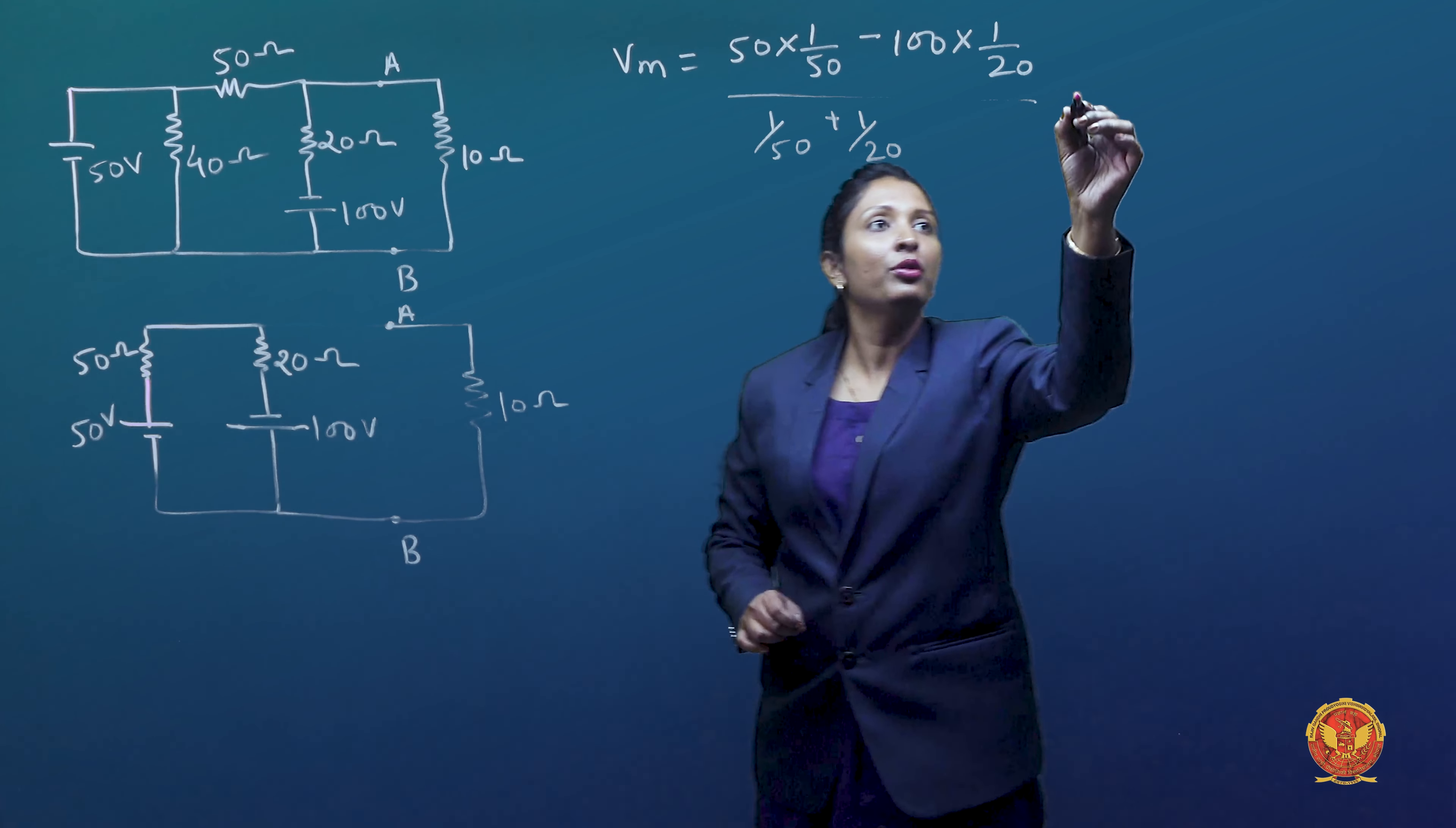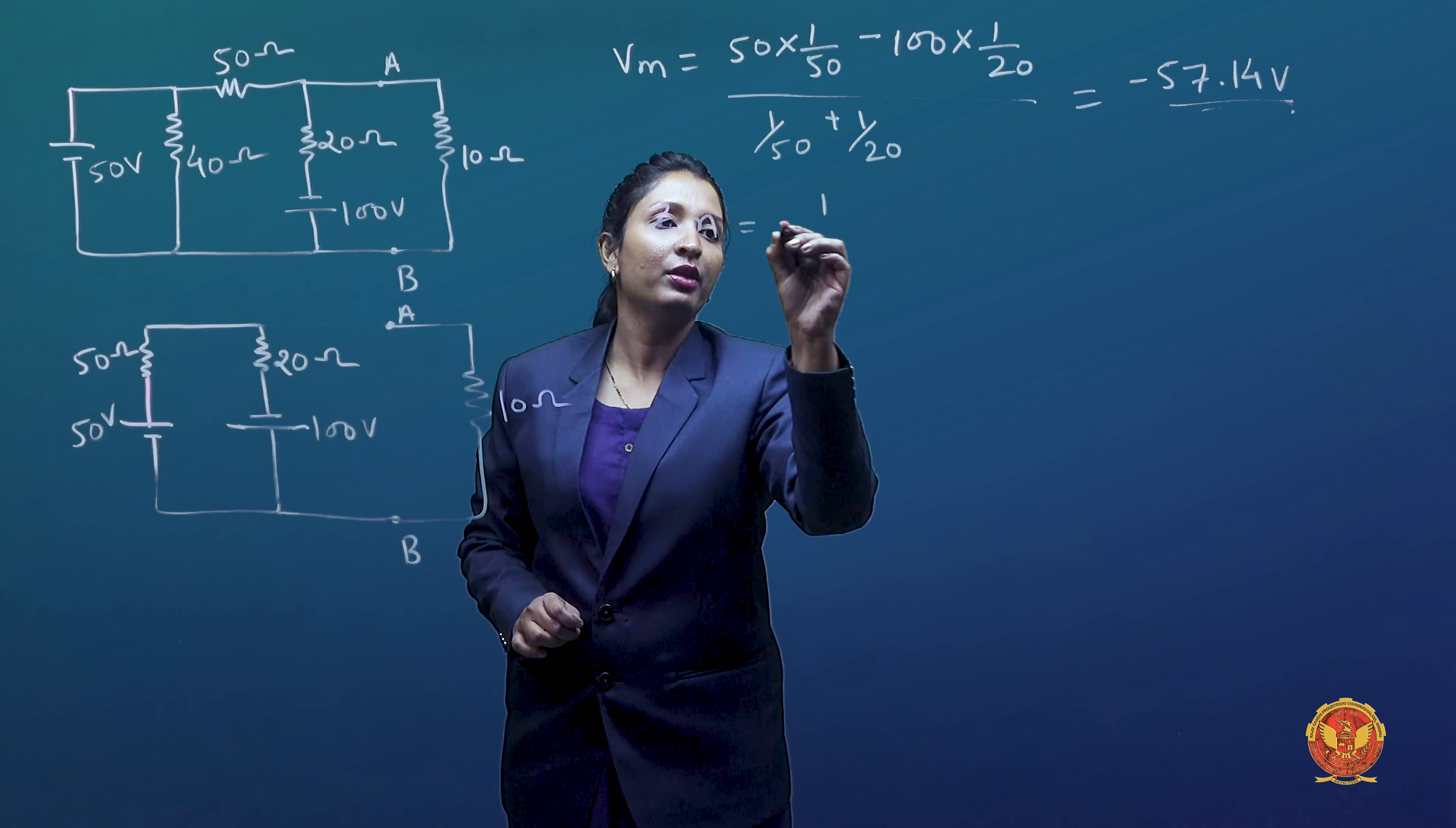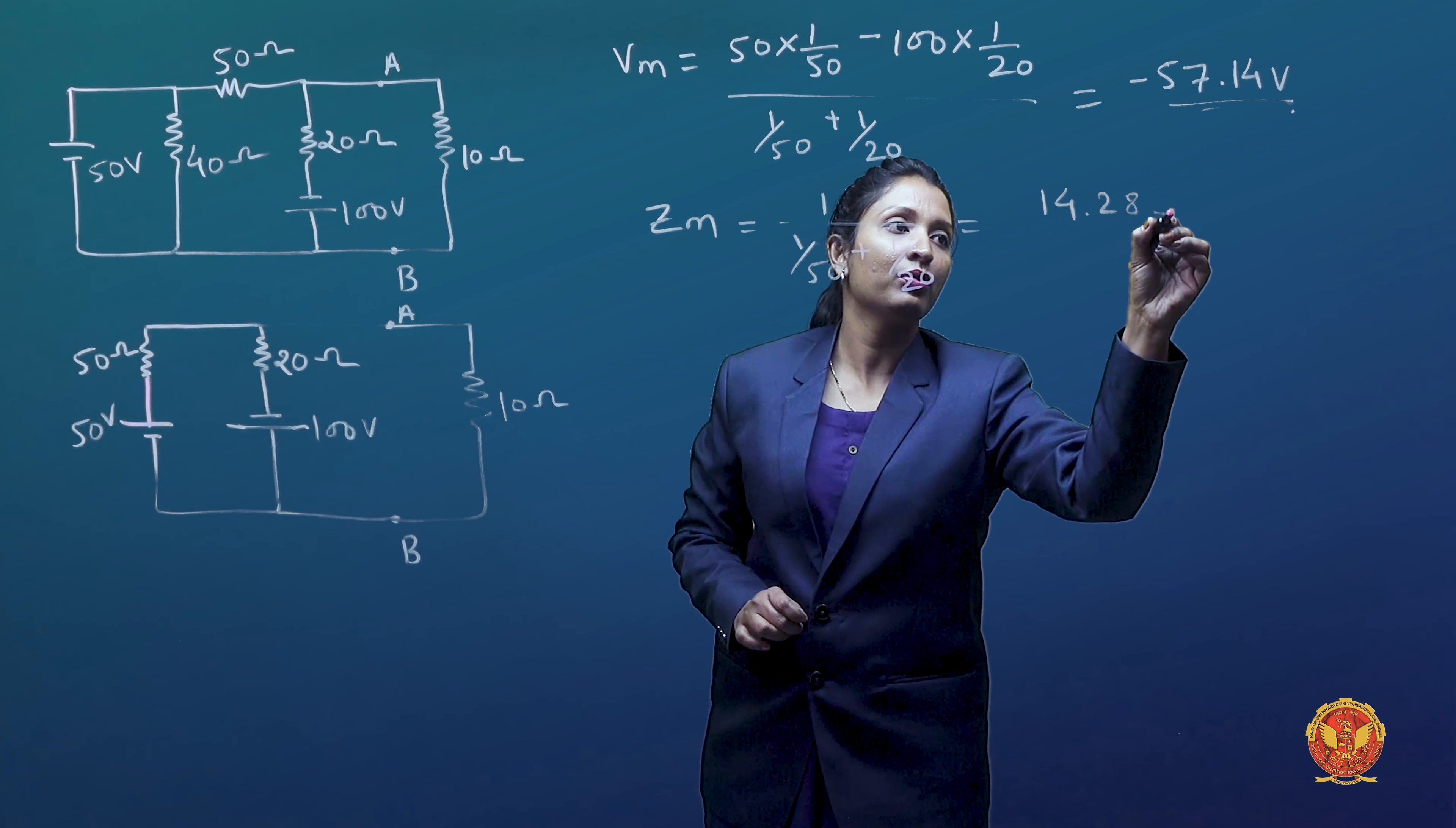This is equal to minus 57.14 volts. This is our Vm. What is Zm? Zm will be equal to 1 upon 1 upon 50 plus 1 upon 20, which is equal to 14.28 Ohms.